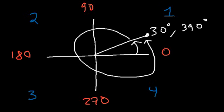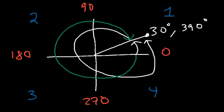The only difference is 390 covers the entire circle at least once. Now, negative 330 — you're traveling the other way for an angle of 330 degrees, but you land at the same spot: 30. So coterminal angles are angles that exist at the same spot but have a different value.